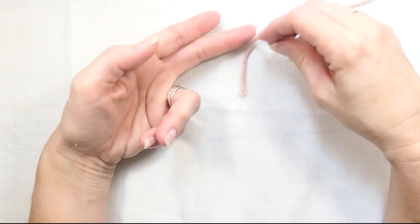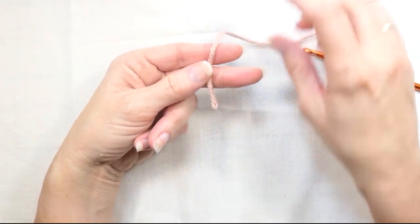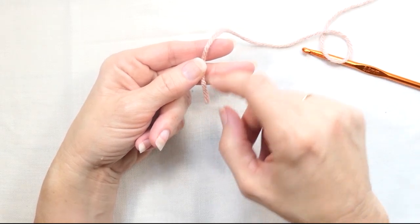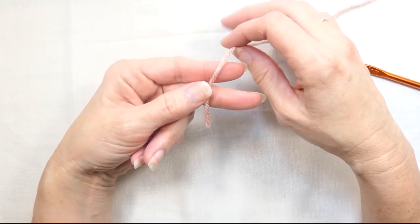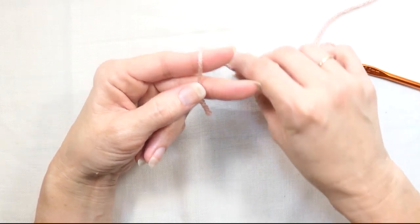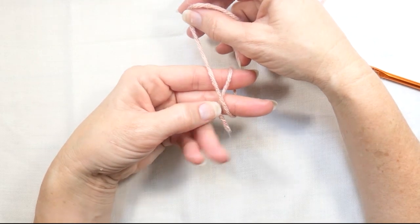So what I do first is I get my index finger and my middle finger and I put the cut end of the yarn over my middle finger and my index finger. And I hold it with my thumb and then I wrap it over and around, and I make an X in the middle.